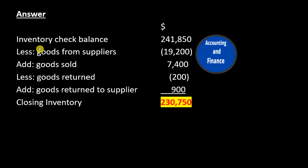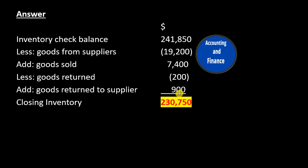Answer: Inventory check balance $241,850. Less goods from suppliers $19,200. Add goods sold $7,400. Less goods returned by customer $200. Add goods returned to supplier $900. Closing inventory = $230,750.